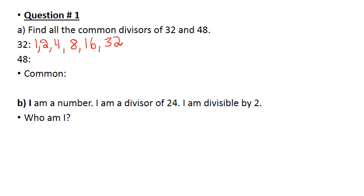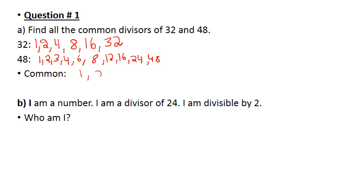Now for 48: 1 times 48, 2 times 24, 3 times 16, 4 times 12, and 6 times 8. So the common divisors for both numbers are 1, 2, 4, 8, and 12.